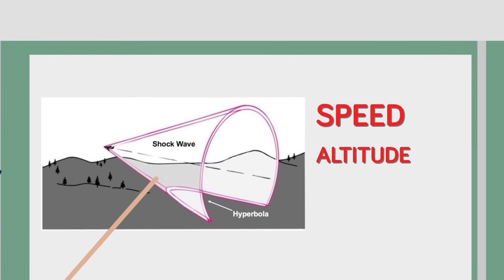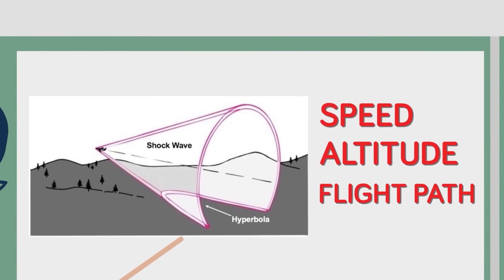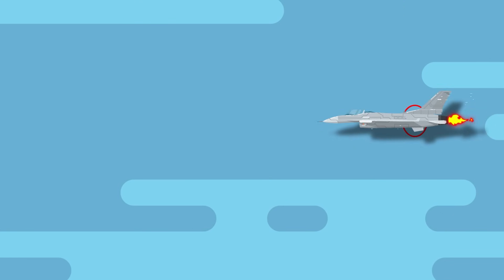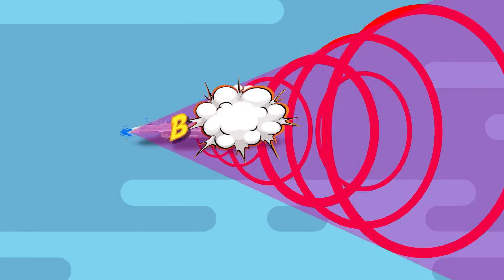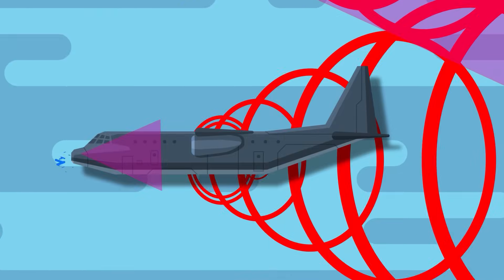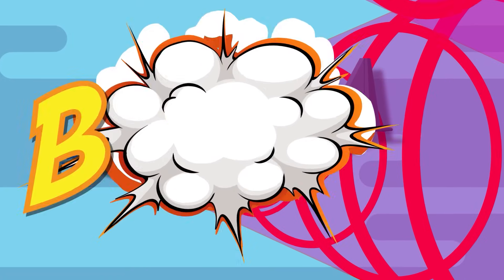Also, the speed, altitude, and flight path that the aircraft takes will affect the Mach cone. A large, heavy aircraft will displace a lot more air than a thin, small aircraft. This means that the larger aircraft's sonic boom will be much stronger and louder.